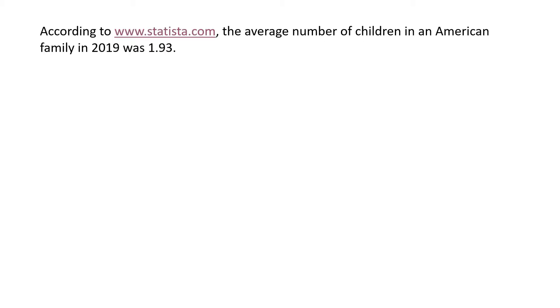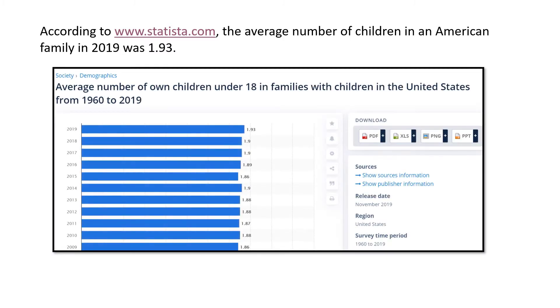For example, the average age of incoming freshmen is 18. The average hourly wage of a fast food worker is right at minimum wage. And according to the Statista website, the average number of children in an American family in 2019 was 1.93.